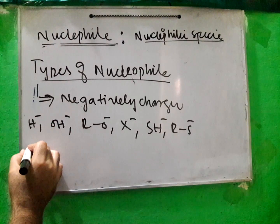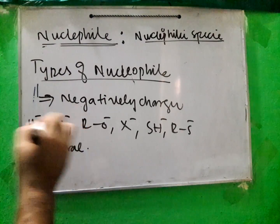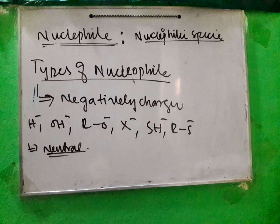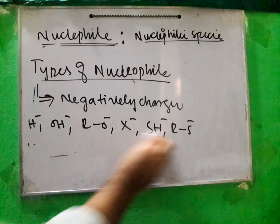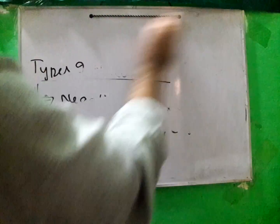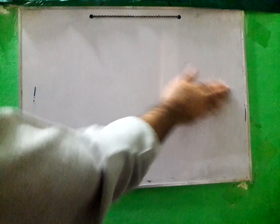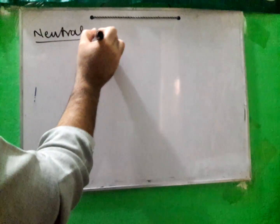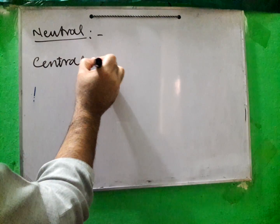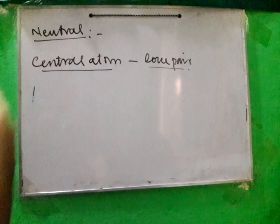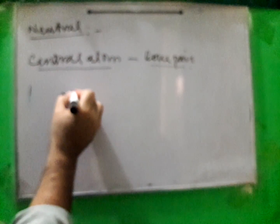Now let's go to the other type — neutral nucleophiles. For neutral nucleophiles, there is a central atom that has a lone pair of electrons available for donation, and therefore it is a nucleophile. For example, nitrogen — like in NH3 or RNH2 — nitrogen has three bonds and a lone pair of electron available.